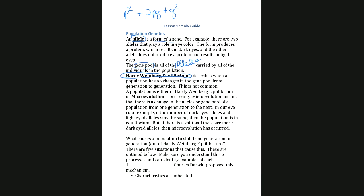What's important to understand about that equation is: if it's true, it means the gene pool for a population from one generation to the next is not changing. The number of alleles for dark eyes stays the same from generation to generation. If a population is not in Hardy-Weinberg equilibrium, that means from one generation to the next there's a change — you have less dark-eyed alleles versus light-eyed alleles, or vice versa.